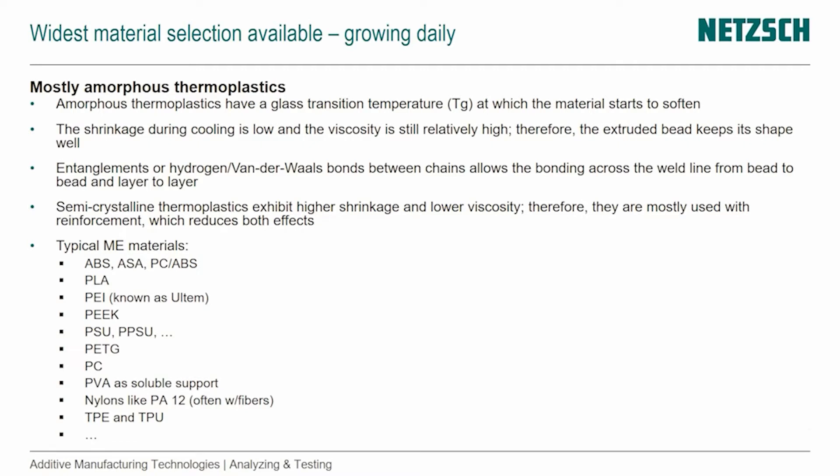We have mostly amorphous thermoplastics. They have a glass transition temperature at which the material starts to soften, and the shrinkage during cooling is slow, and the viscosity is still relatively high.